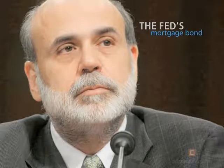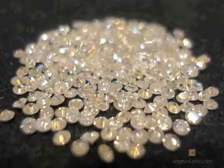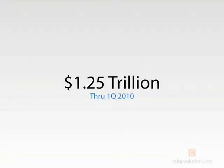Let's look at what the Federal Reserve is doing to keep mortgage rates low — specifically the Fed's mortgage bond purchase program. With hopes of resuscitating the housing market, the Federal Reserve promised to purchase $1.25 trillion of mortgage bonds through the first quarter of 2010. They hoped that the purchasing of these bonds would lower mortgage rates and give life to the housing market.